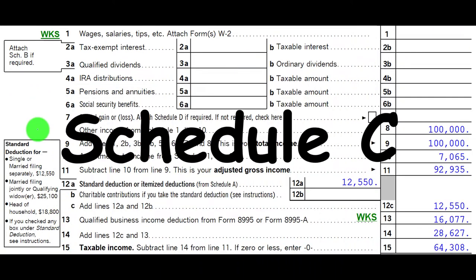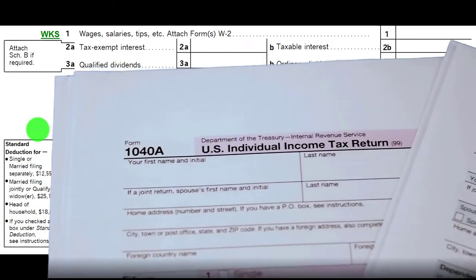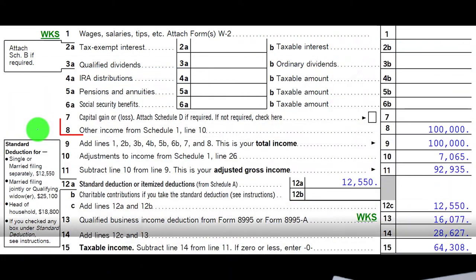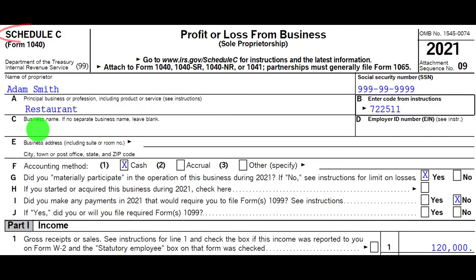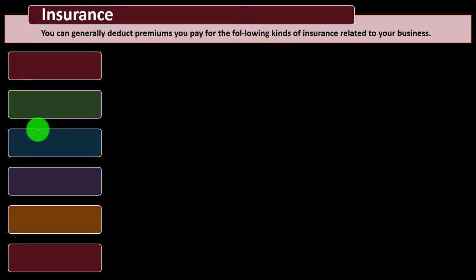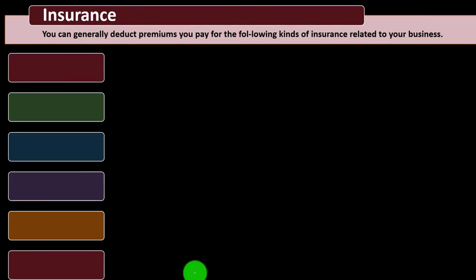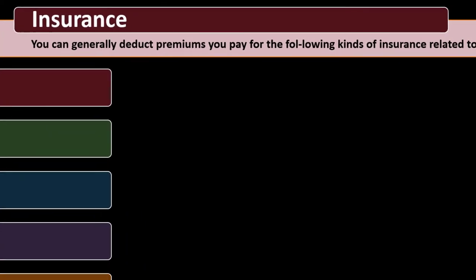We see here where the Schedule C bottom line rolls into Schedule 1, and the bottom line of Schedule 1 rolls into page 1 of Form 1040, line number 8. Schedule C is basically an income statement. We're now looking at insurance. In general, the same rule applies — we're looking at ordinary and necessary expenses, which determine the types of insurance that may be deductible.